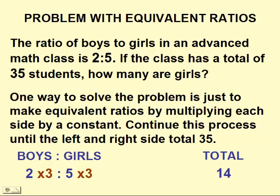So we'd carry on with this process. We'd start with 2 to 5 again. This time let's multiply by 3 and we'd come up with an equivalent ratio of 6 to 15, giving us a total of 21. We would carry this process on. Next time we'd multiply by 4, 5, etc., until we got a total of 35.